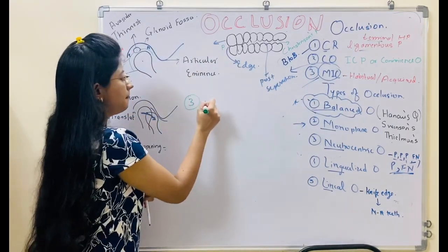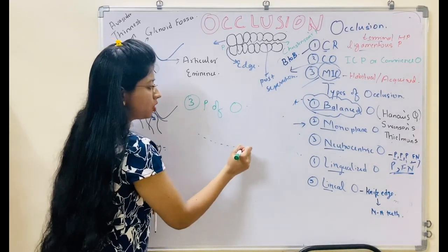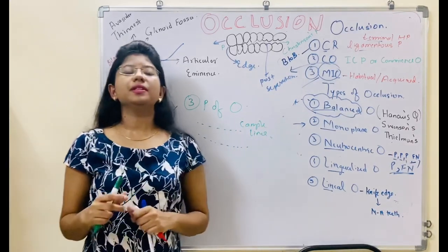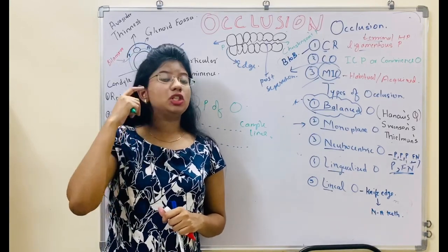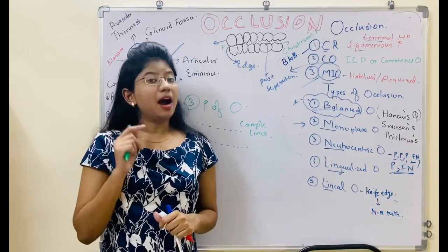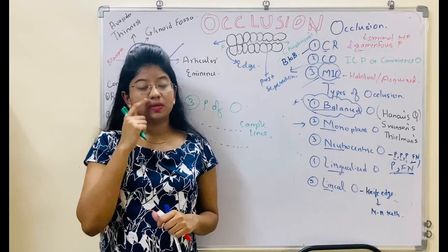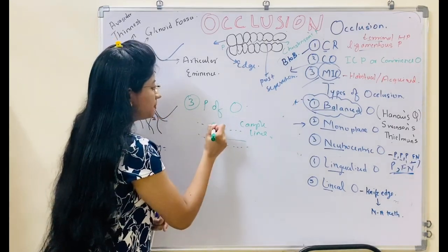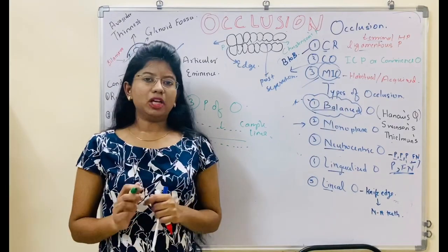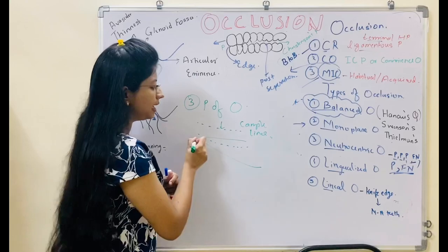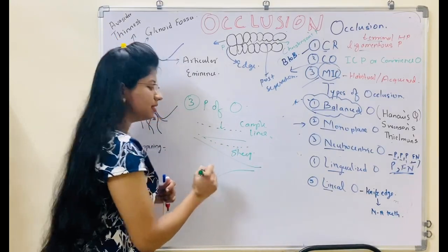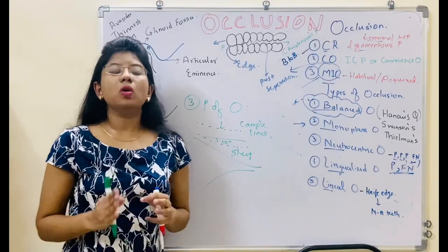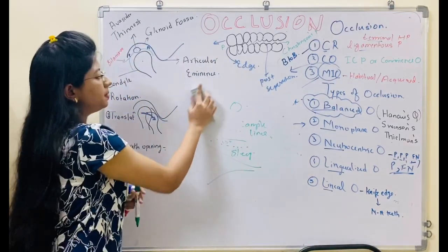The third factor is the plane of occlusion, which is parallel to Camper's line. Camper's line starts from the ala of the nose to the superior part of the tragus. The normal ala-tragus line starts from the ala of the nose and can end anywhere on the tragus, not necessarily the superior part. We can modify the plane of occlusion, but only by a degree of up to 10 — not more than 10.